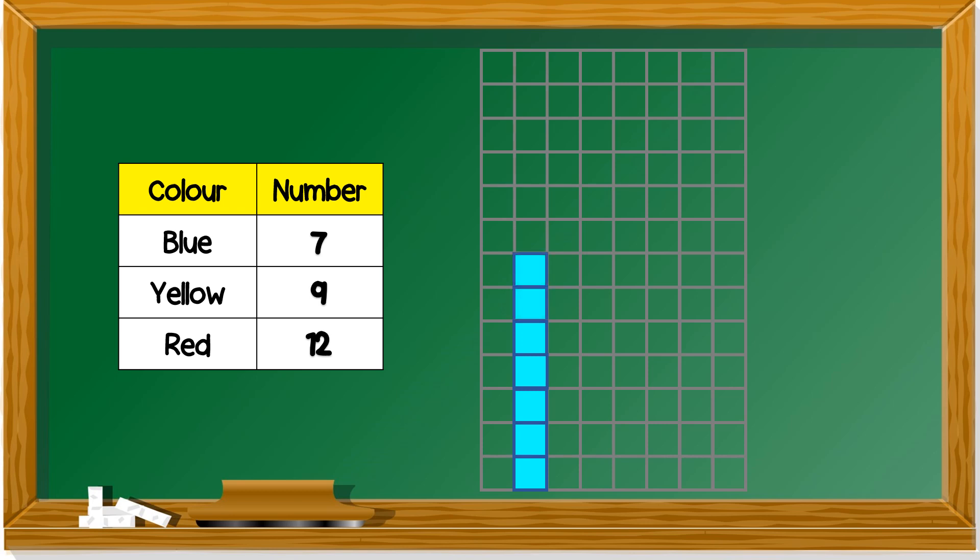How about yellow? Yellow has nine. So, you color nine. One, two, three, four, five, six, seven, eight, nine. Yellow has nine.